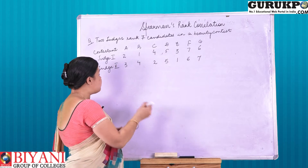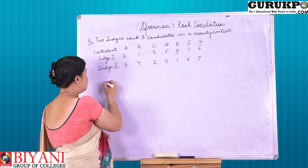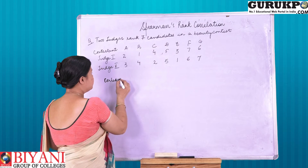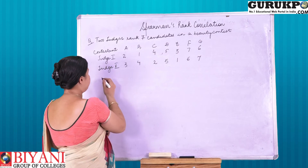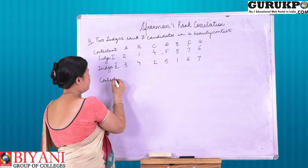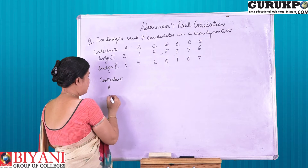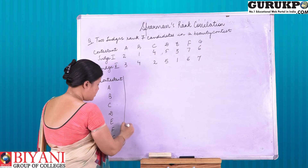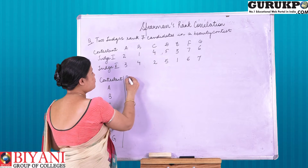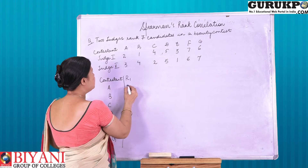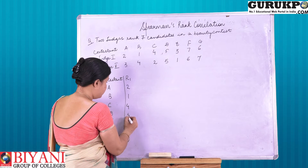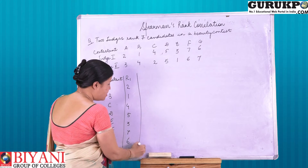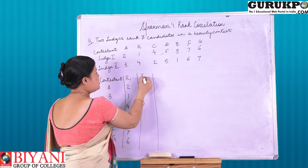To calculate Rank Correlation, first we have to design a table. We will write down the contestants, then we will write down rank one given by judge one, and parallelly we are going to write down the next rank given by the second judge.